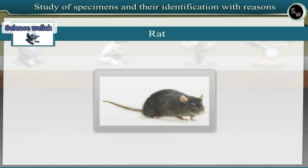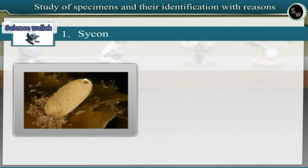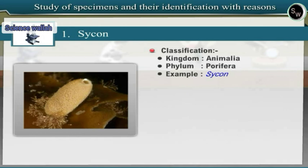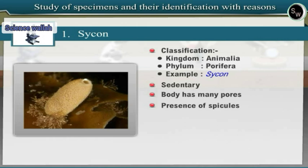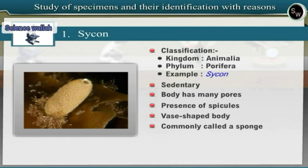Specimen 1: Sponge (Psychon). Observe a preserved specimen of Psychon. Psychon belongs to Phylum Porifera of Kingdom Animalia. Since the sponge has a sedentary mode, its body has many pores and there is presence of spicules, therefore sponge is included in Phylum Porifera. It has a vase-shaped body and is commonly called a sponge.